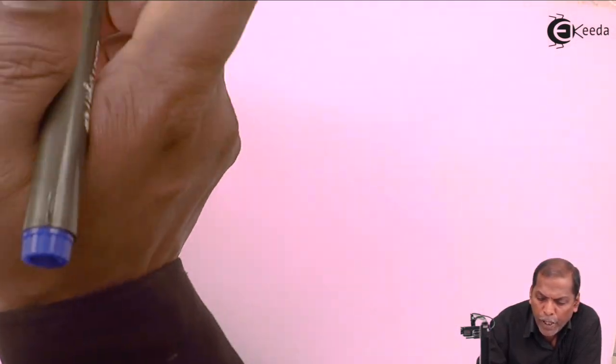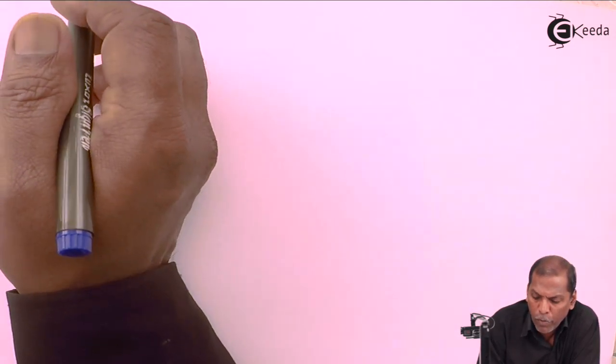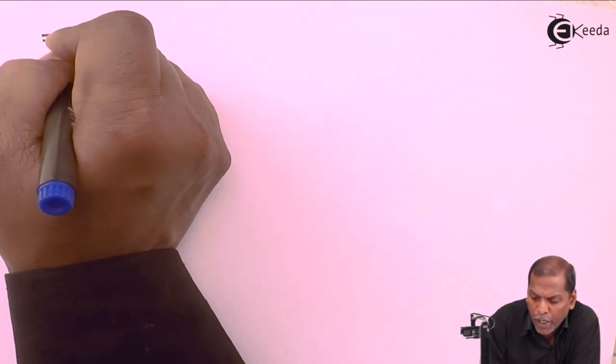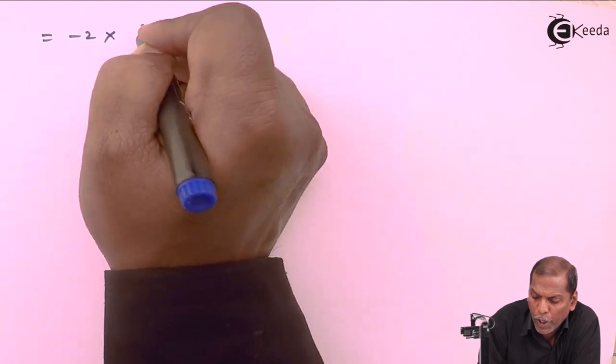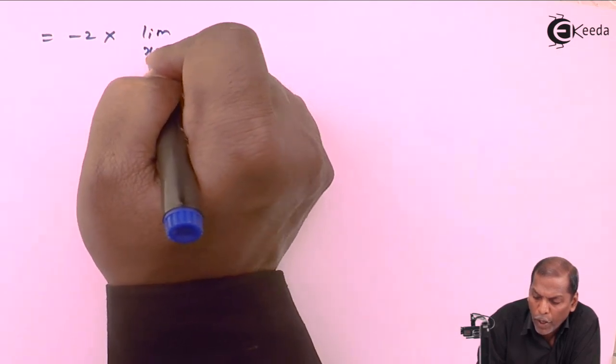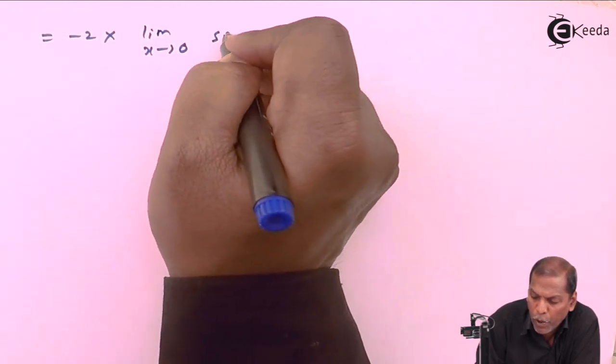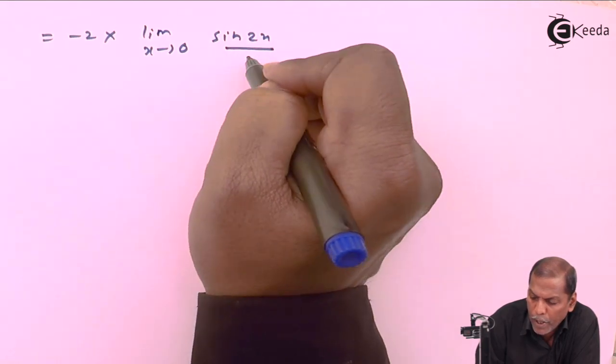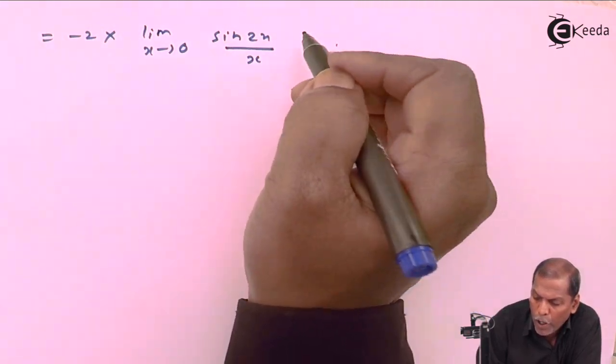So from this we take minus 2 constant term, that's why it is outside the limit. So minus 2 into limit x tends to zero, sin of 2x upon x